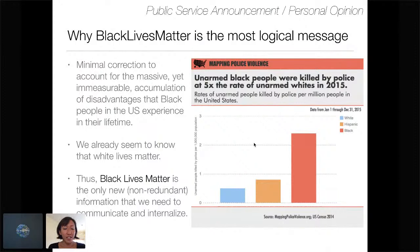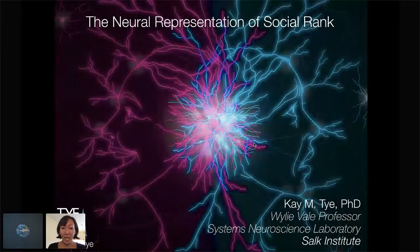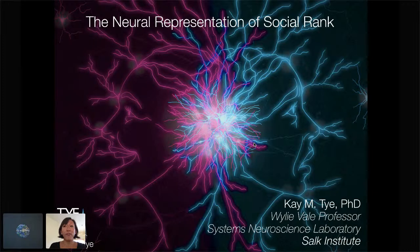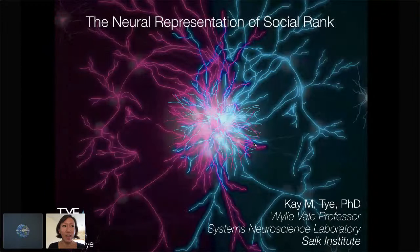I just want to take a quick moment to discuss why Black Lives Matter is the most logical message, because this is the minimal correction we can do to account for the enormous and unquantifiable accumulation of disadvantages that Black people in America experience in their lifetime. We already seem to know that white lives matter, so therefore Black Lives Matter is the only new, non-redundant information we need to communicate and internalize as a general global population. It's been a difficult week for many of us, but I feel extremely excited to unveil this project.